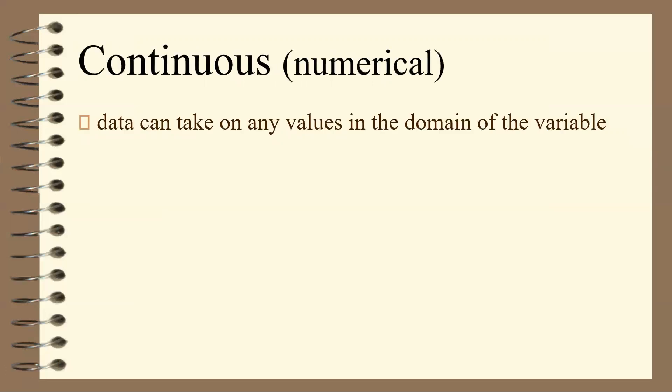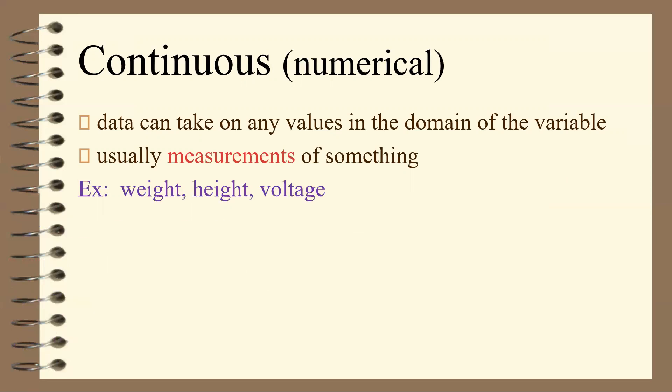Continuous numerical data can take on any value in the domain of the variable — these are usually measurements. You can connect the line between the data points. Examples include weight, height, and voltage. Weight can be to the tenths, hundredths, and even then there are numbers in between because you can always extend the decimal.